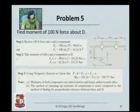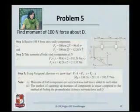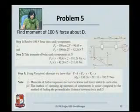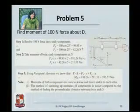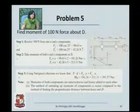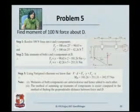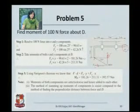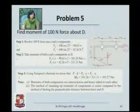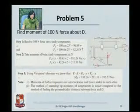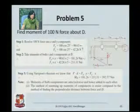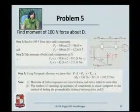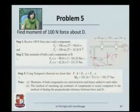Here the problem is: there is a force applied at A and you have to find out the moment of that force about point D. Using the Varignon's theorem, first of all resolve the 100 Newton force into its vertical component and the horizontal component, so that you can use the perpendicular distances of the vertical and the horizontal components. The vertical component is going to cause a rotation about D in the clockwise direction. Similarly, the horizontal component also acts in the clockwise direction.